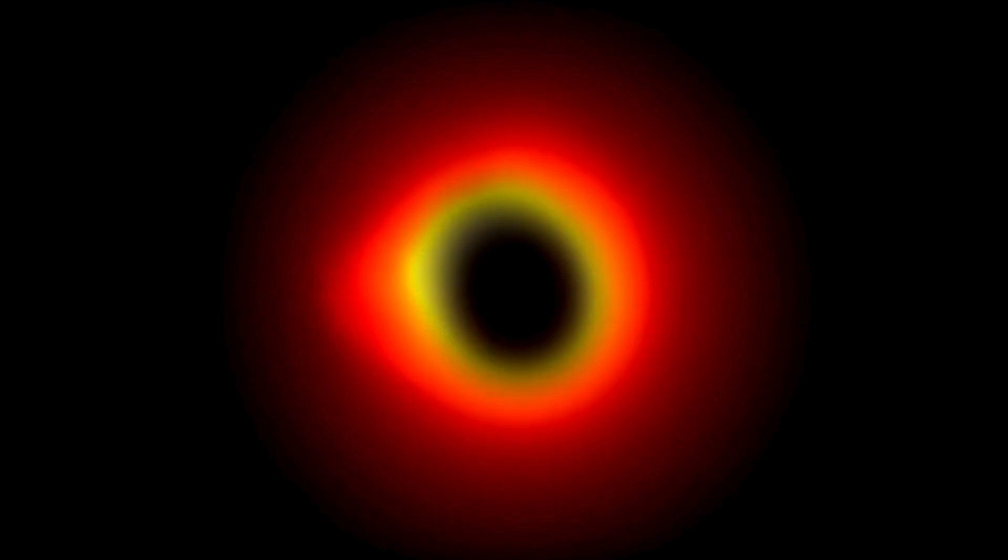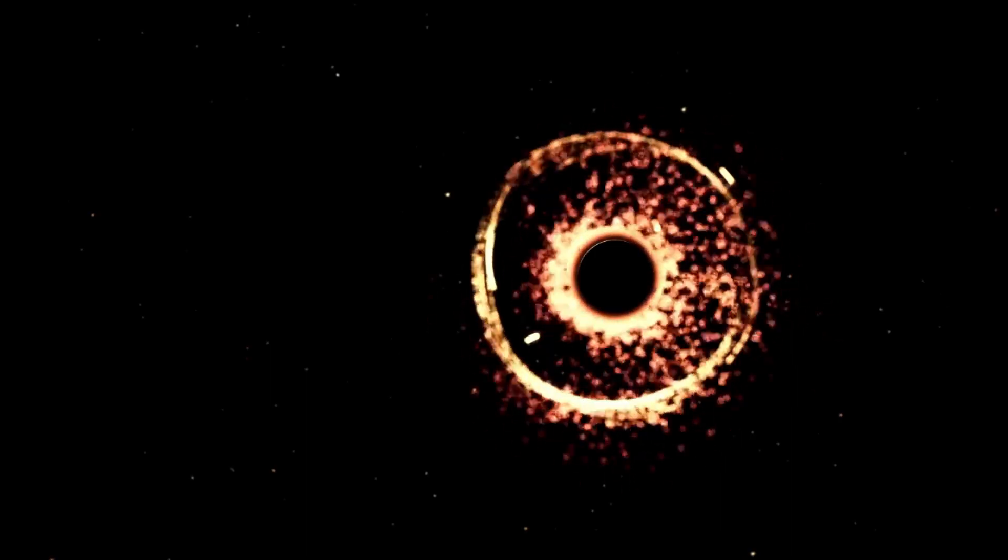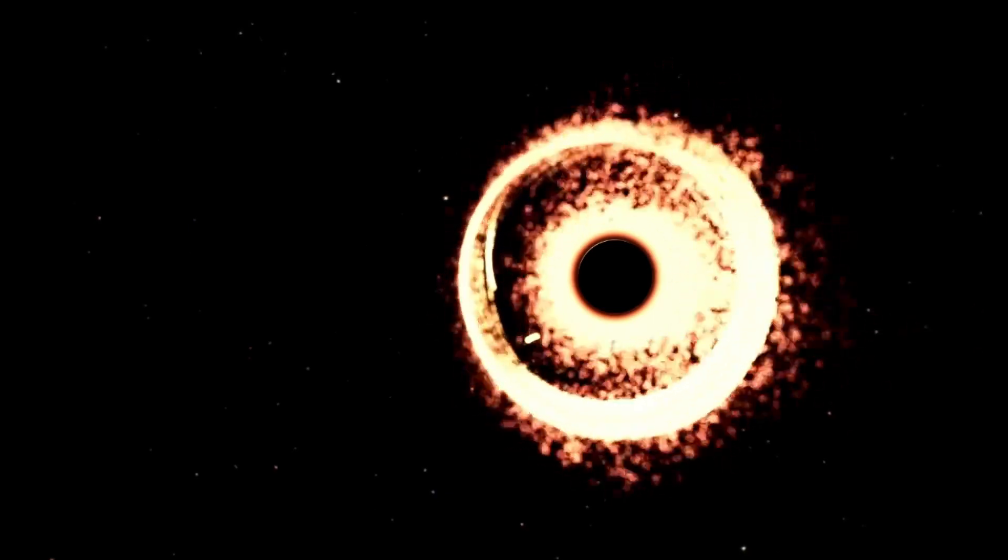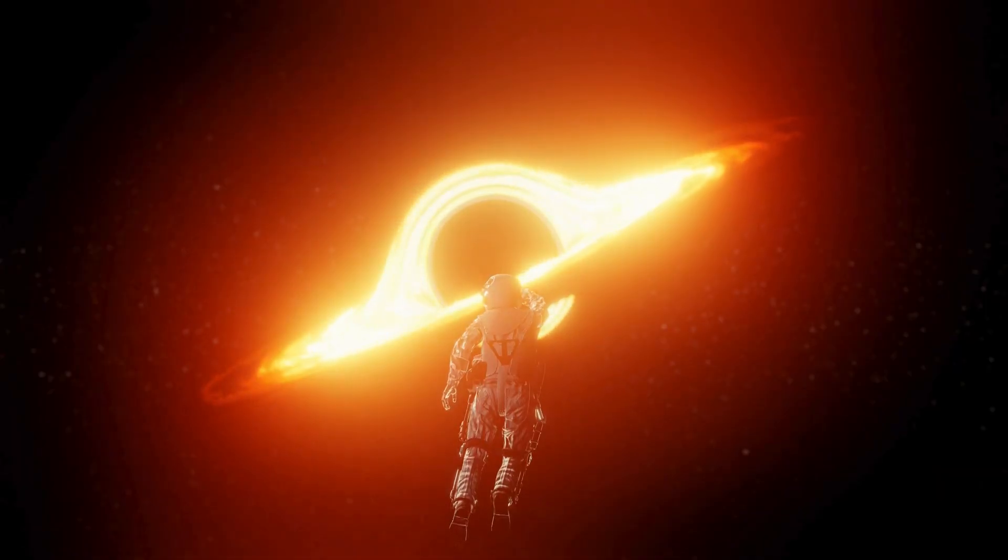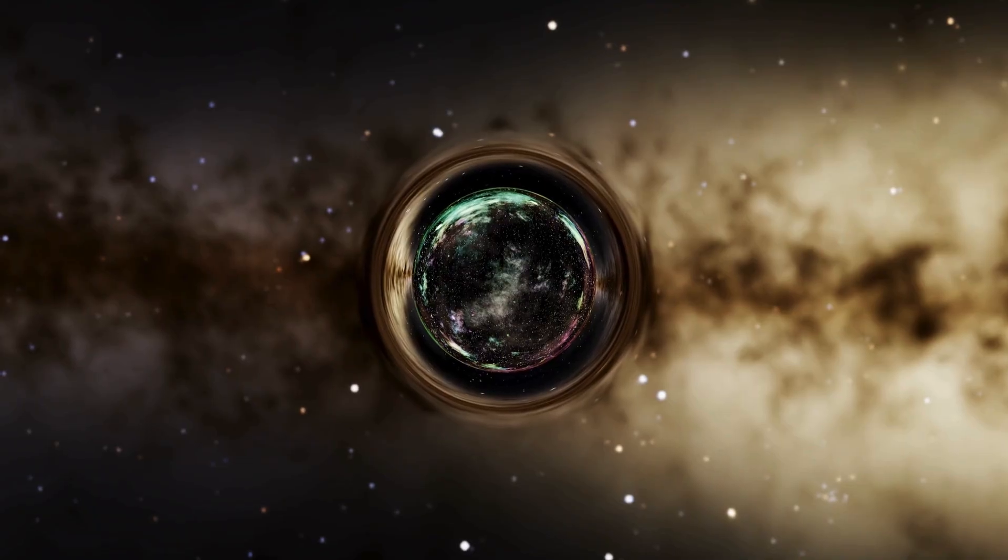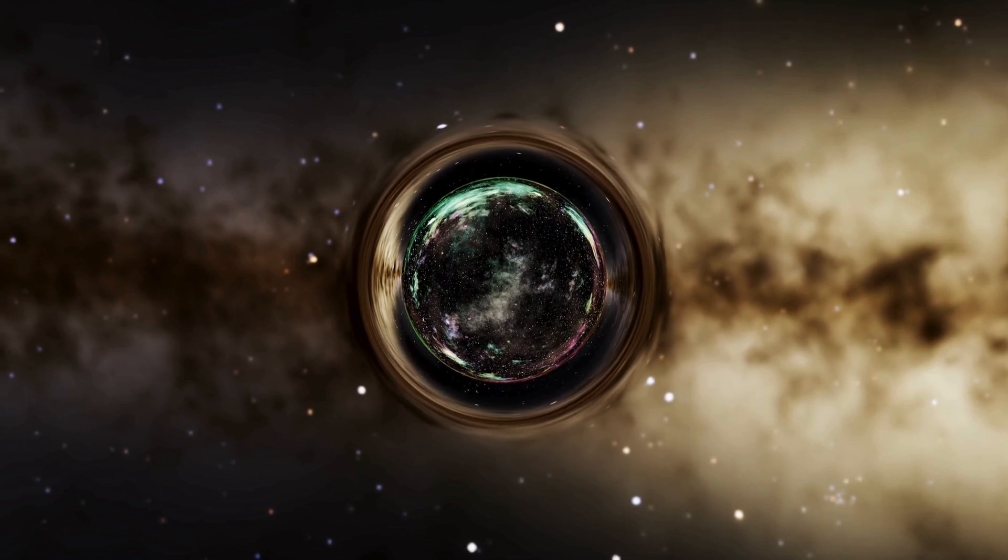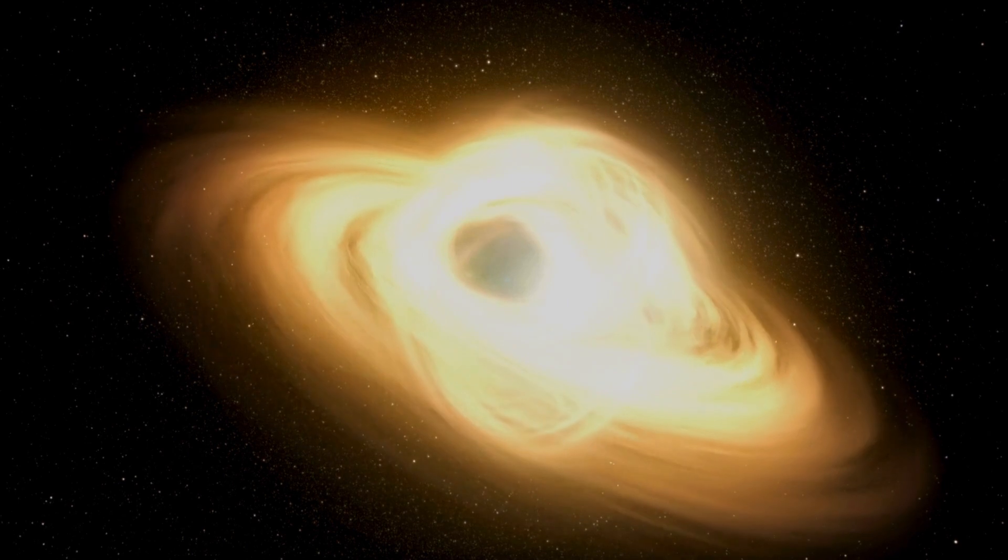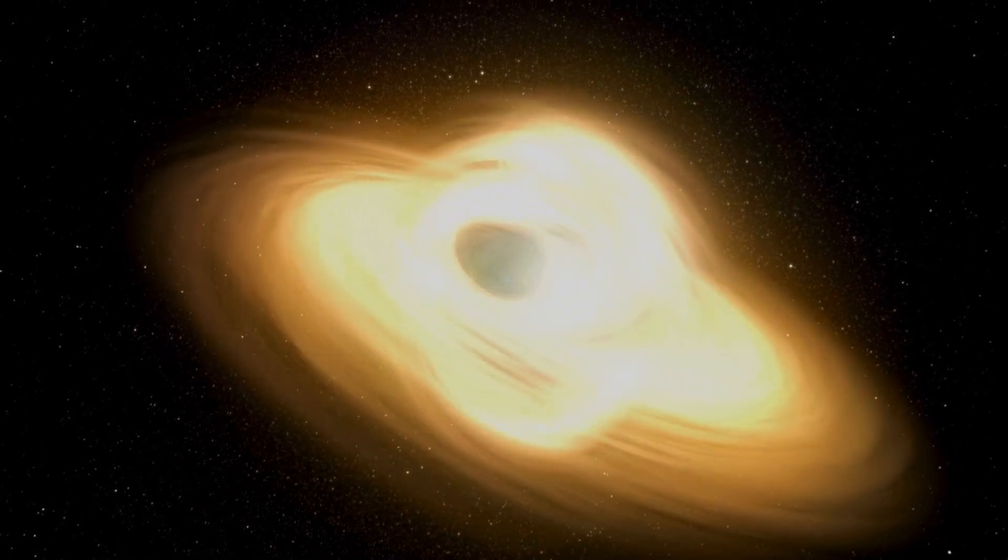Scientists have been fascinated by black holes for centuries, ever since they pondered objects in space so massive and dense that they could trap light. The most famous ideas about black holes were predicted by Einstein's theory of general relativity. Essentially, when a massive star dies, it leaves behind a tiny, dense core. If this core's mass is more than three times that of the sun, gravity overwhelms everything else, leading to the formation of a black hole.